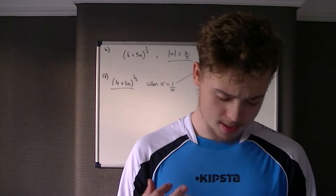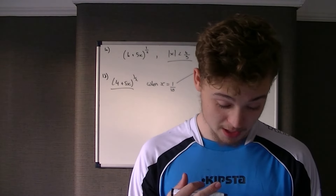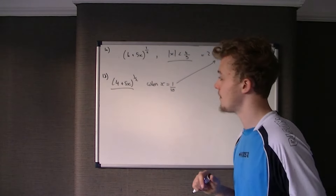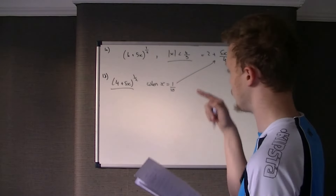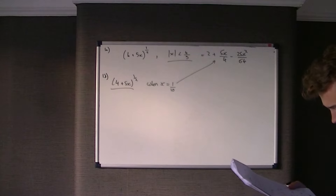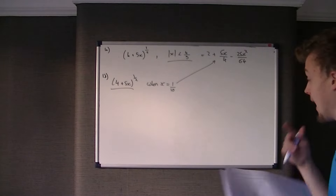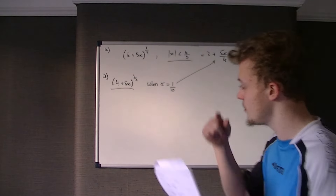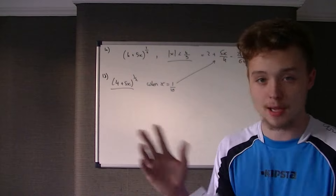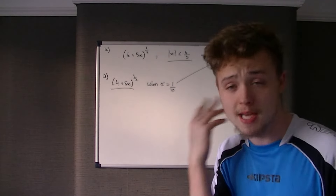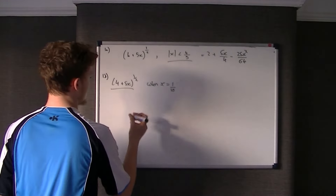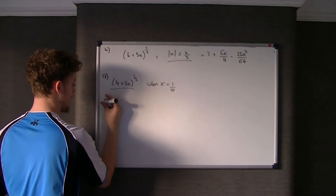When you look at part C, it says substitute x equals a tenth into your binomial expansion to find an approximation for root 2. So part B and part C can't be the same thing. For part B, all we do is substitute x equals a tenth directly into the original expression 4 plus 5x, and evaluate it using our calculators.